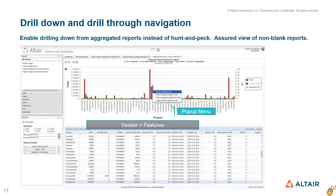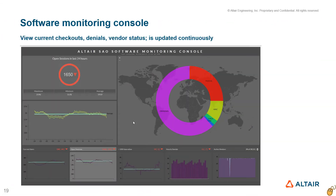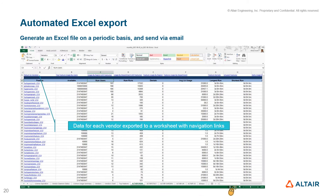Most reports provide context-sensitive drill-down and drill-through navigation options. The real-time portal is provided for any user who needs to view current checkouts, software users, denials, and vendor status. The SAO Monitoring Console provides an aggregated view of some key metrics and is updated continuously. SAO also allows for setting up scheduled automated Excel reports, which provide a variety of hyperlinks for easy navigation within the spreadsheet.